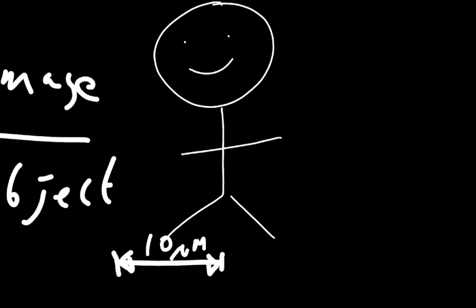The crucial part for working out the magnification for the entire drawing is this scale bar. This is not 10 micrometres in length — this is an image of something that is 10 micrometres in length. So what you have to do is work out how large this image of the scale bar is, and you do this very simply by picking up a ruler, placing it alongside, and measuring the size of the scale bar.